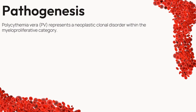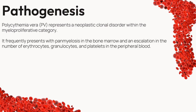Polycythemia vera, or PV, is characterized by a clonal disorder — a condition where a group of cells originates from a single, abnormal precursor cell. In PV, the bone marrow paints a picture of panmyelosis, a landscape where various blood cell types proliferate uncontrollably. This overgrowth extends to the peripheral blood, leading to an increase in the number of erythrocytes, granulocytes, and platelets.